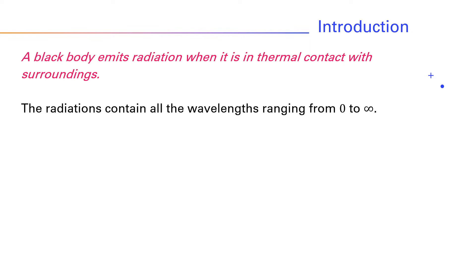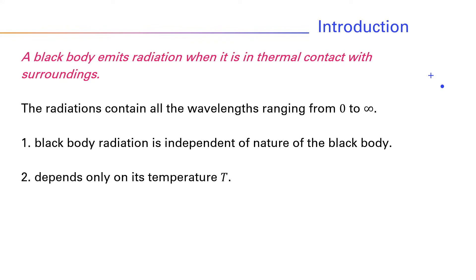From general thermodynamic arguments, Kirchhoff showed that the distribution of black body radiation is independent of nature of the black body, that is, materials of the wall of the black body, and depends only on its temperature T.